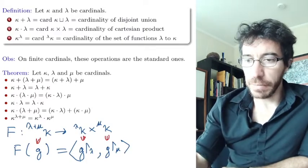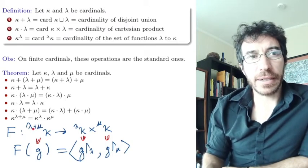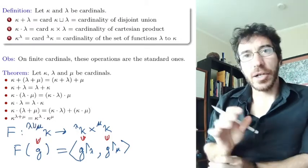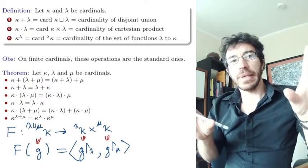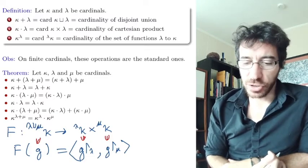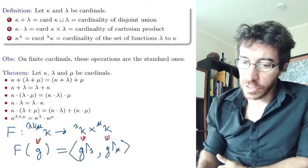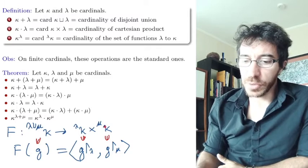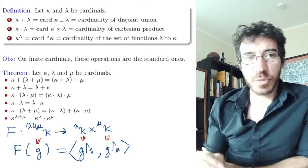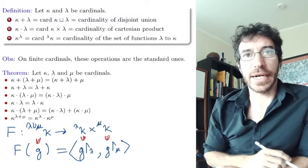So a function whose original domain was the disjoint union of lambda and mu now splits into two functions — one with domain lambda and one with domain mu. To show that it's actually a bijection, you need to show there's an inverse: given two functions, one with domain lambda and one with domain mu, you can recover a function whose domain is the disjoint union of lambda and mu.